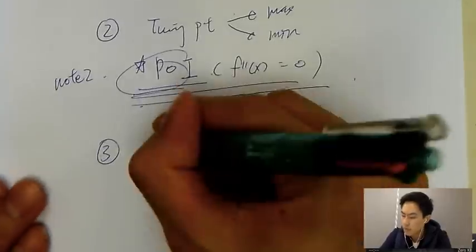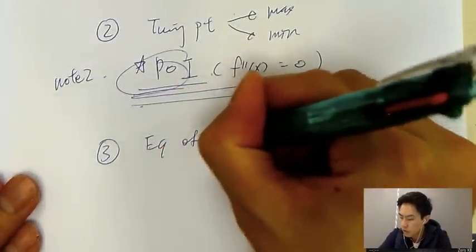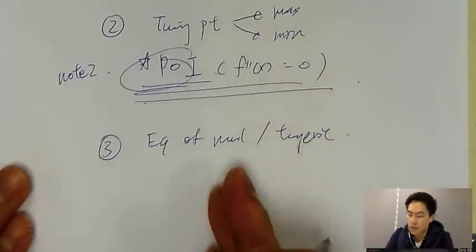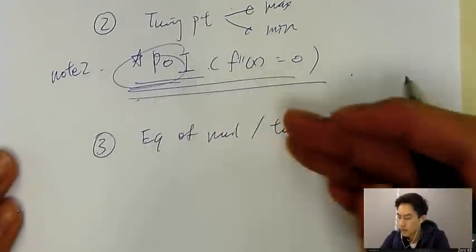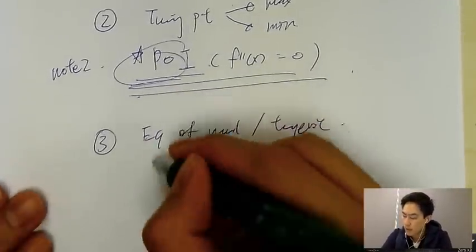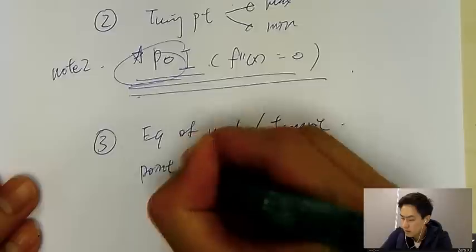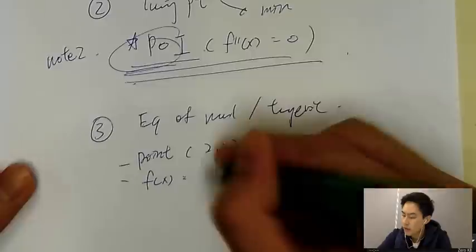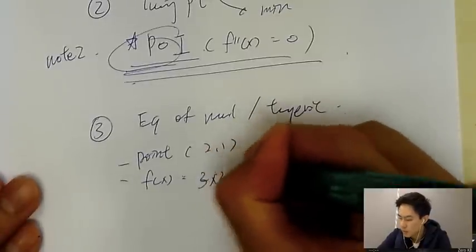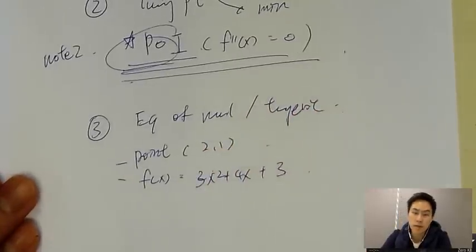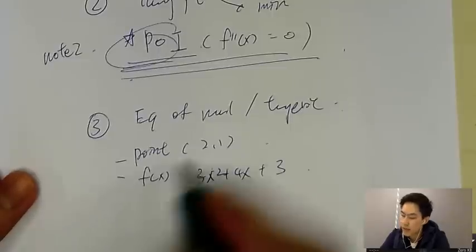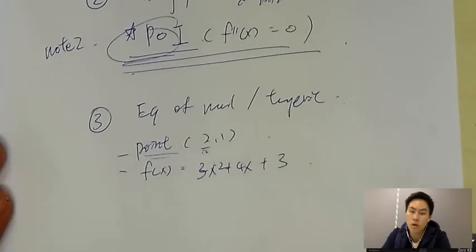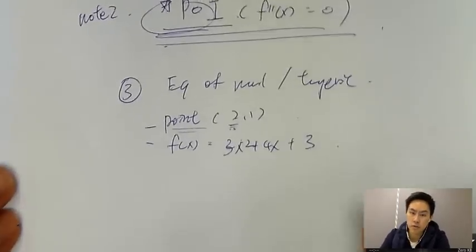And for the third question type, it will be equation of normal or tangent. They ask you to find the equation of normal and tangent by giving you the point, maybe 2, 1, and then they will give you also the equation, let's say 3x squared plus 4x plus 3. Find out the equation of tangent at the point 2, 1. So how do you find that out? You need to understand this.